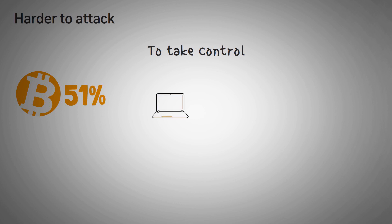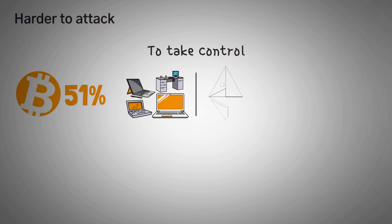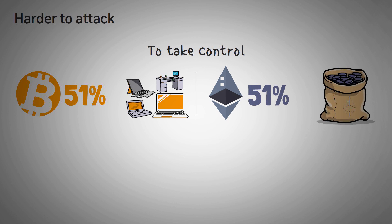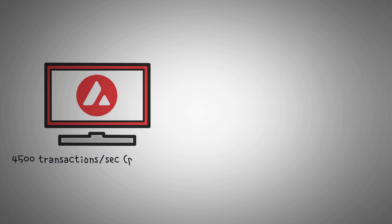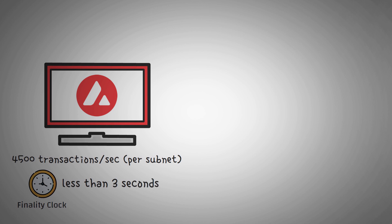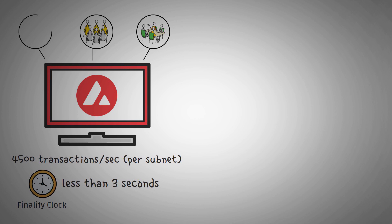Also, due to some technicalities, this consensus model is actually much more difficult to attack. Unlike Bitcoin, where you would need 51% of all the computers to attack the network, or Ethereum 2.0, where you would need 51% of all the staked tokens, with Avalanche you would need to control up to 80% of the network to perform an attack. This model allows for up to 4,500 transactions per second per subnet, and has a finality of less than 3 seconds. Each subnet can process up to 4,500 transactions per second, and if you have a thousand subnets, you can do a lot of transactions.